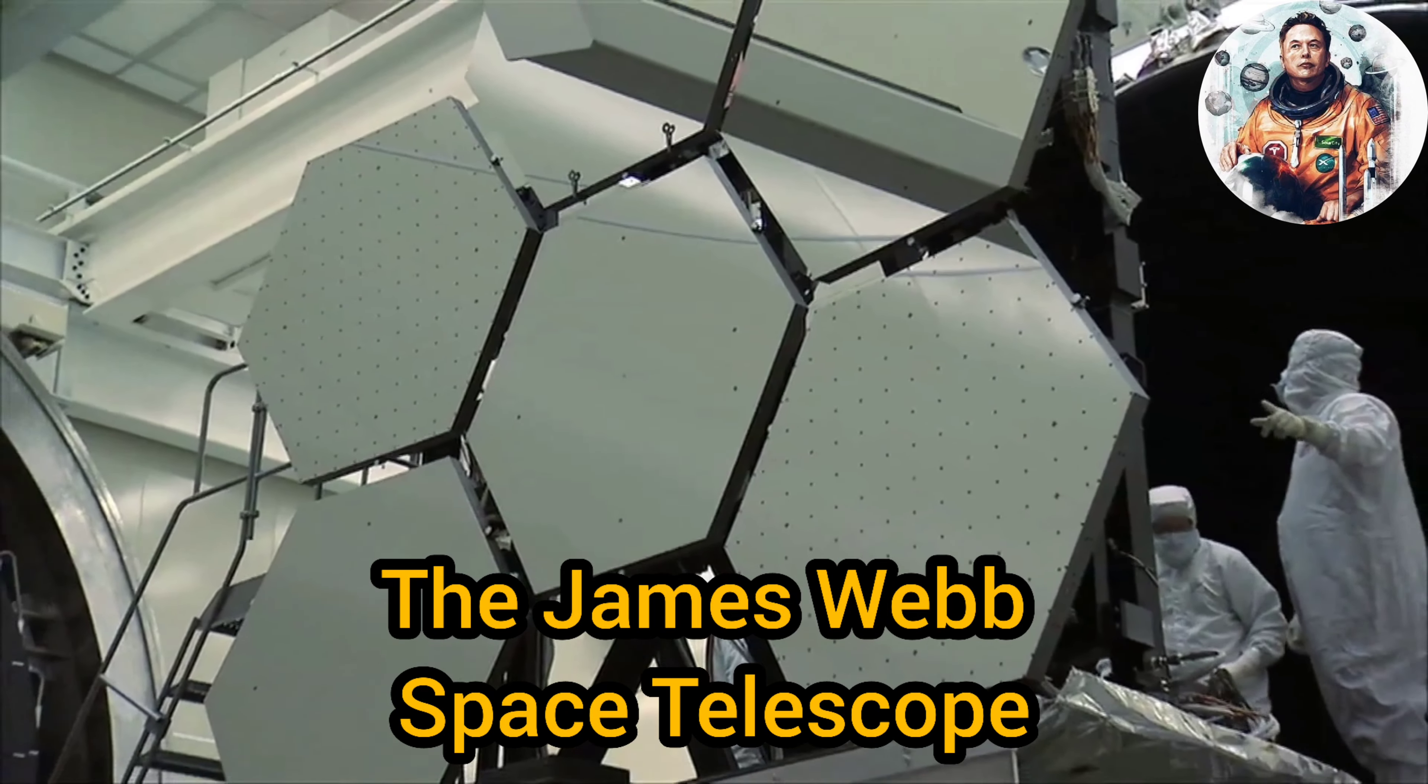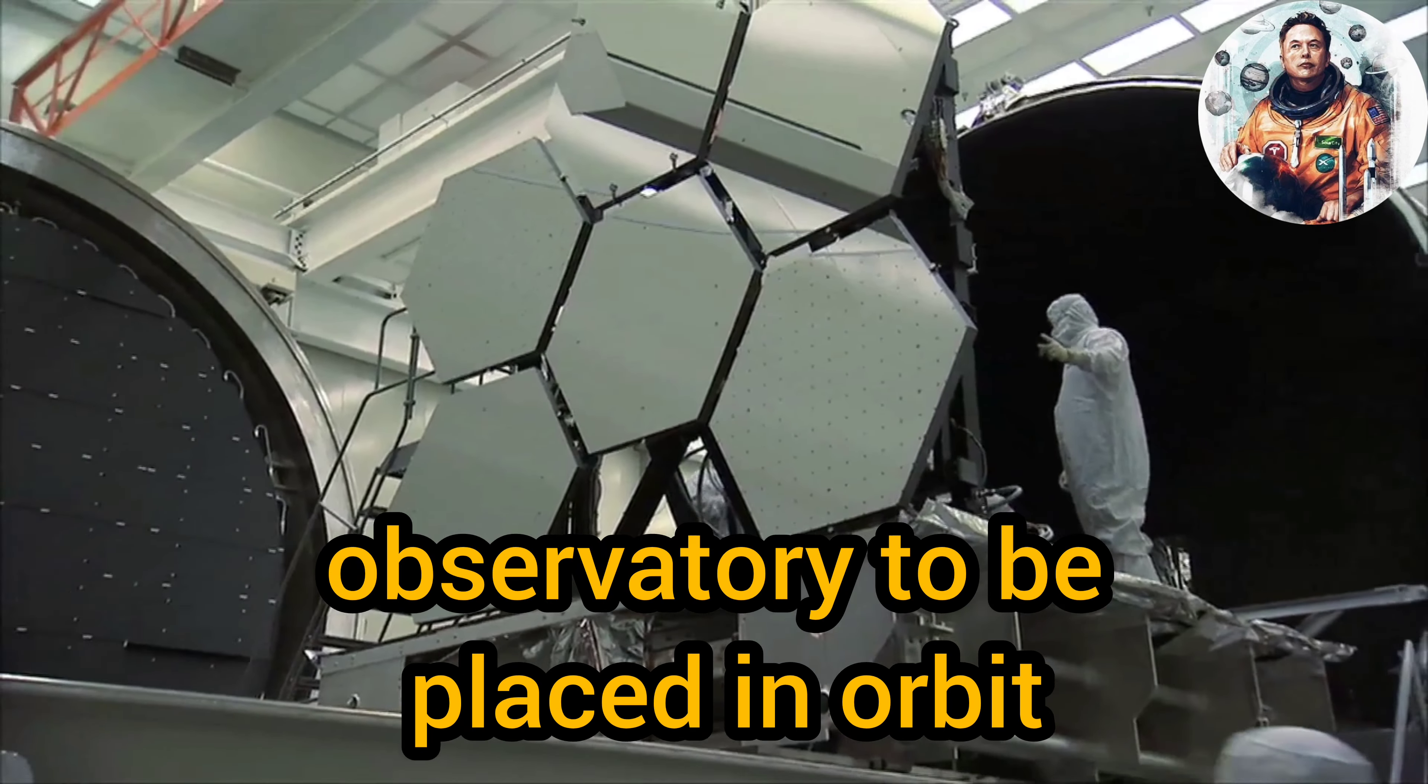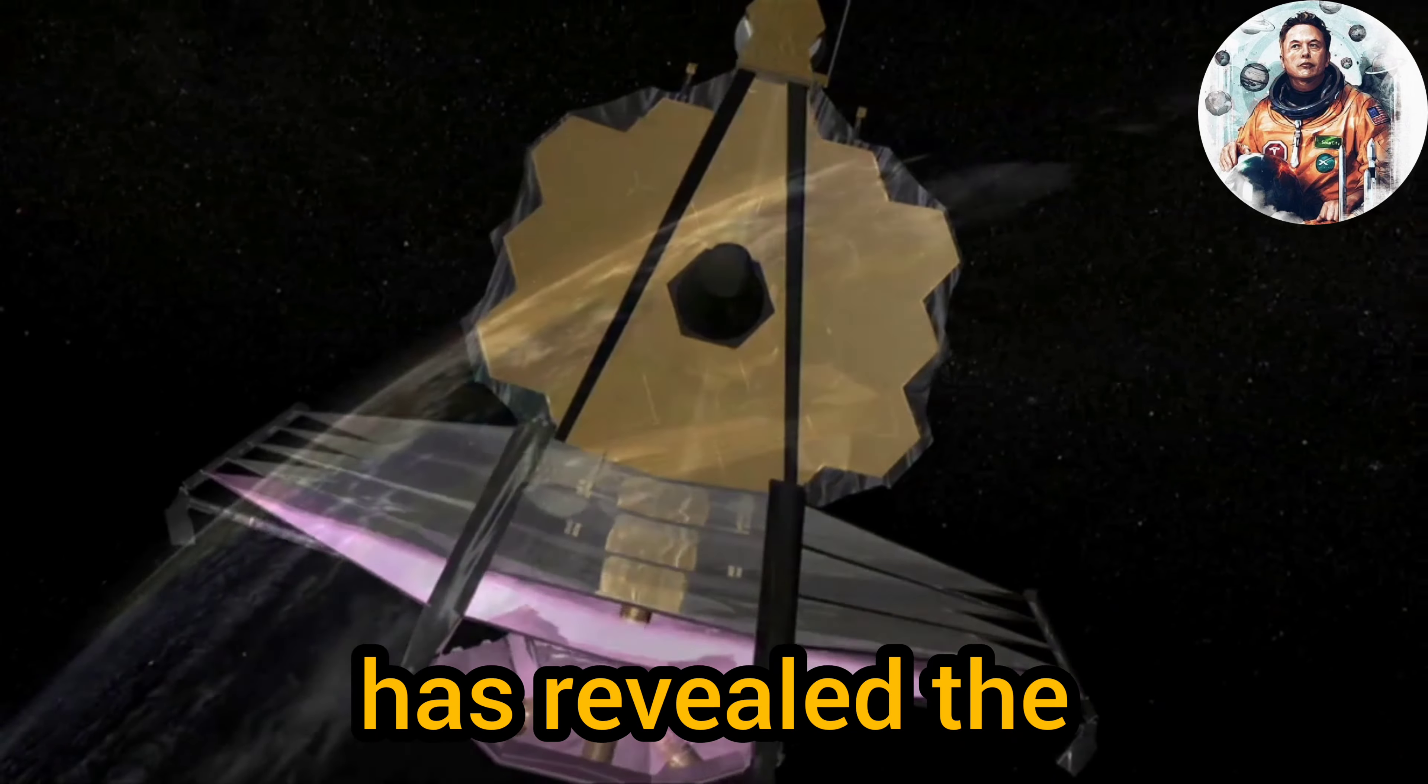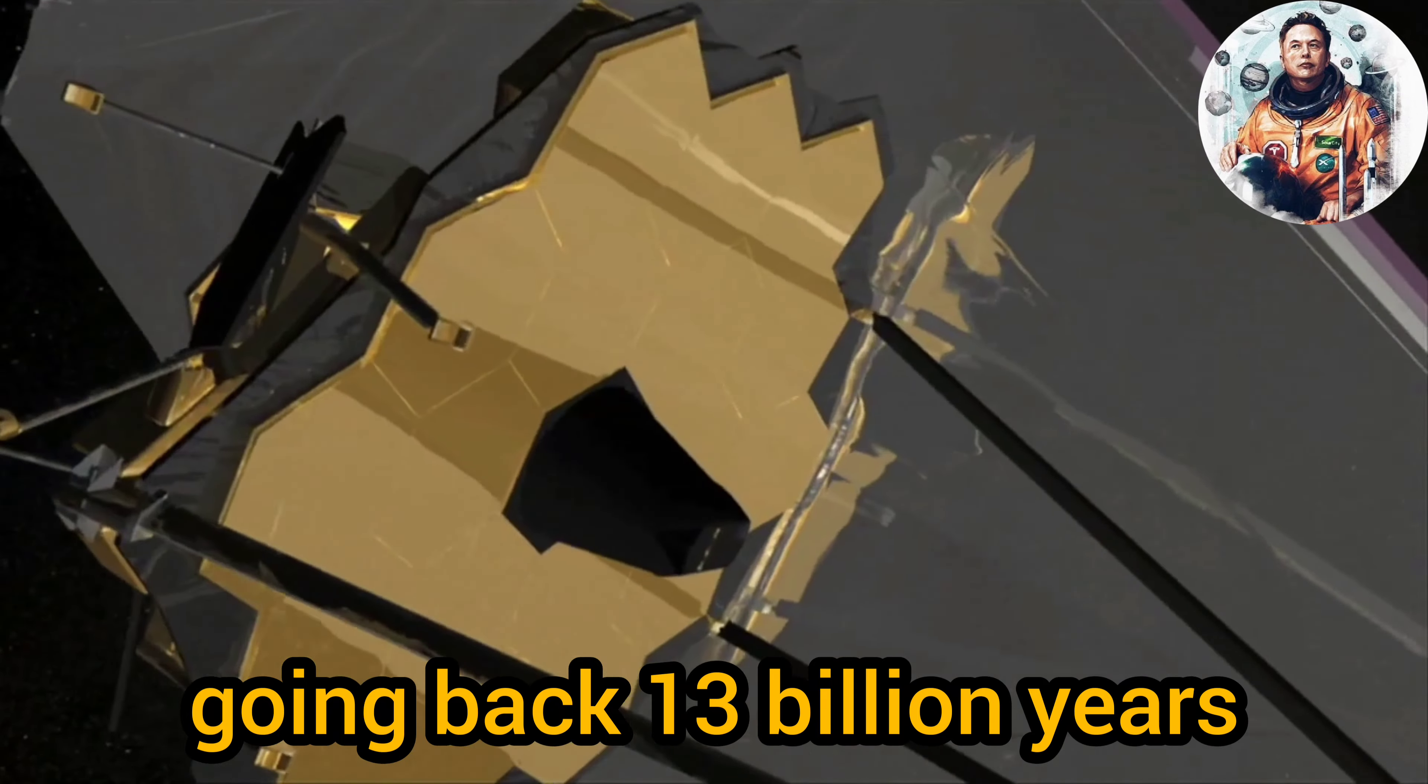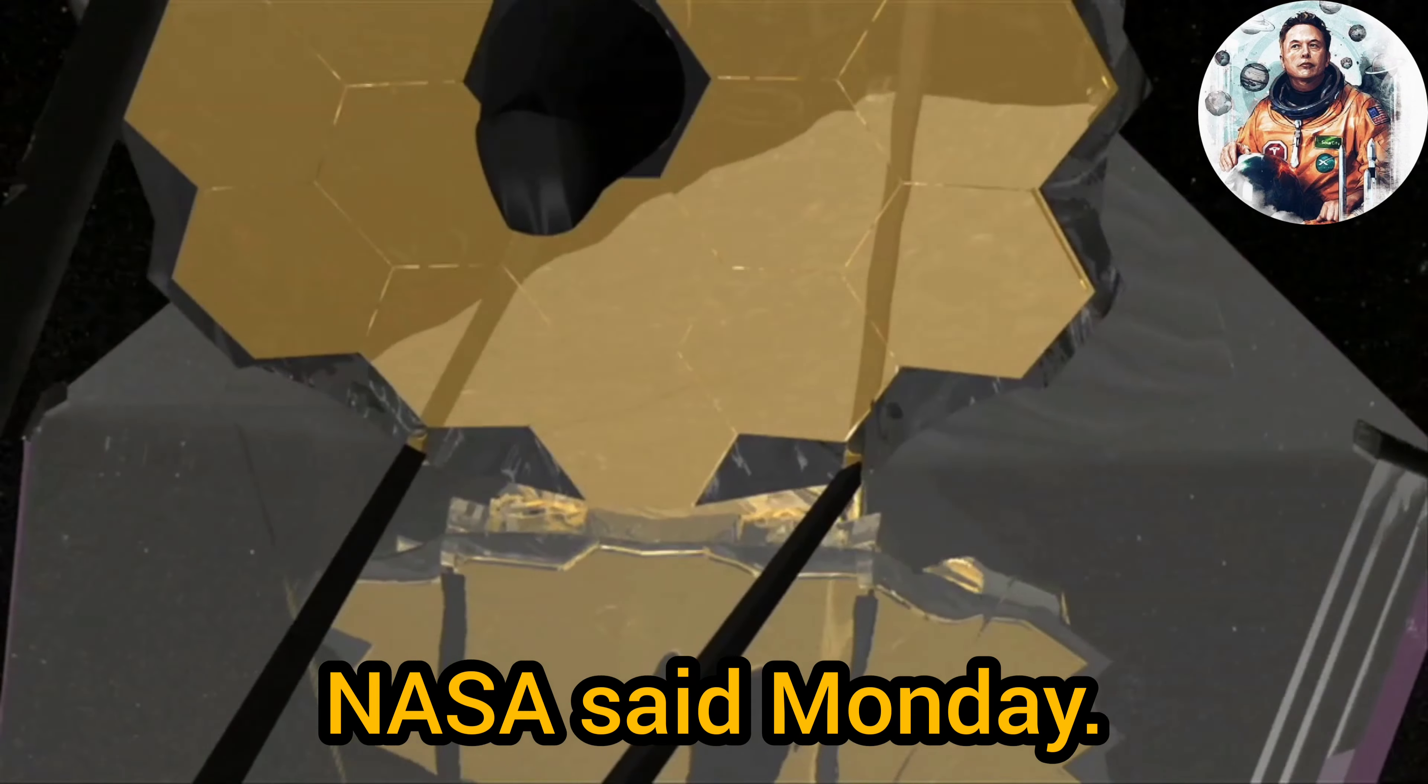The James Webb Space Telescope, the most powerful observatory to be placed in orbit, has revealed the deepest and sharpest infrared image of the early universe ever taken, going back 13 billion years, NASA said Monday.